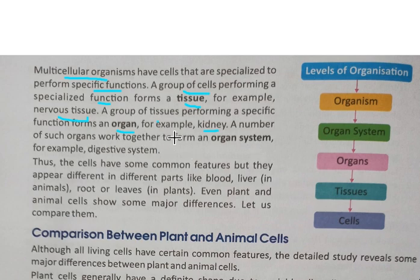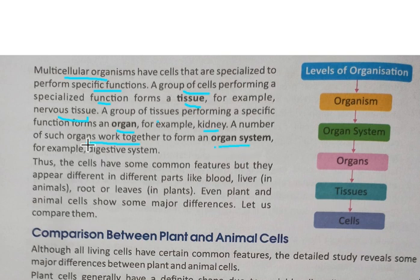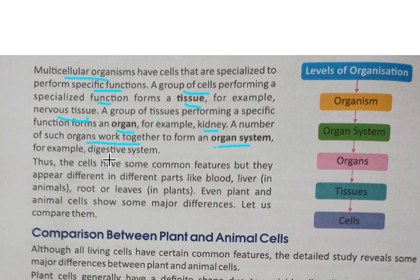A number of such organs working together form an organ system. So a cell, a group of cells is tissue; a group of tissues is an organ; and a group of organs is an organ system. This is the hierarchy of organization.